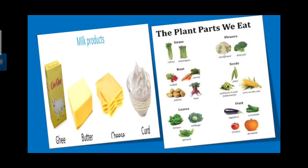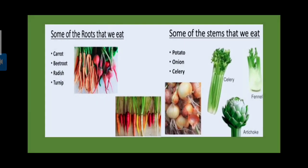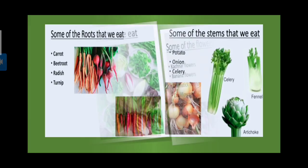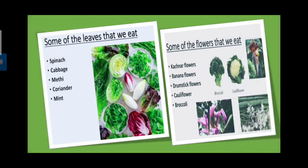Now the plant parts we eat. Some of the roots that we eat: carrot, beetroot, radish, turmeric. All the vegetables are underground soil, so roots you can see. Some of the stems that we eat: potato, onion, fennel.